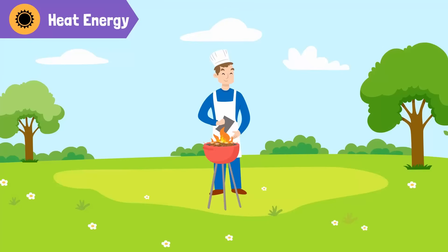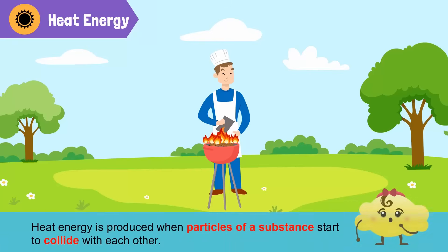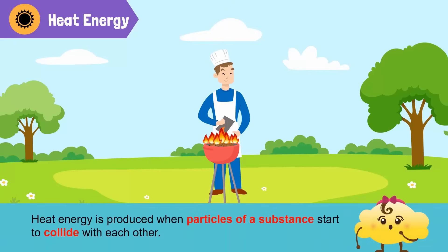Uncle is making a fire in the grill to cook food. What kind of energy is Uncle using to cook the food? He's using fire, which gives us heat energy. Heat cooks our food. It is produced when the particles of a substance start to move faster and faster and start to collide with each other.